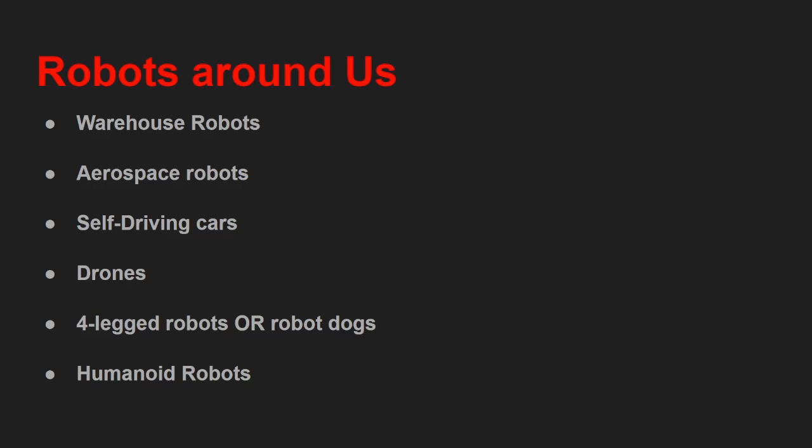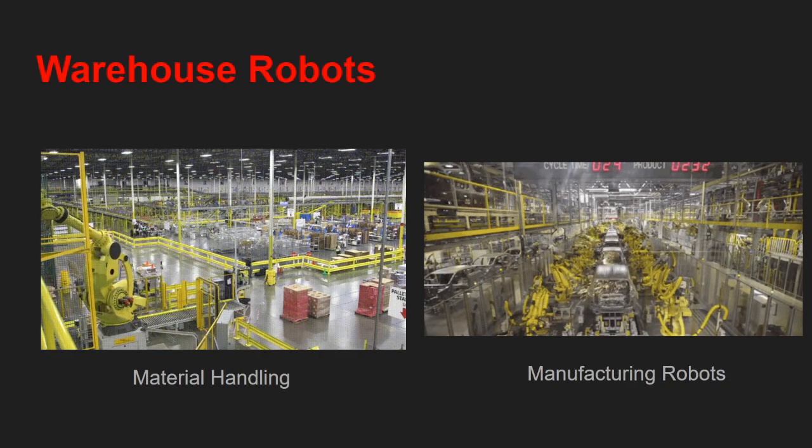There are also drones, which are flying robots, and four-legged robots or robot dogs that walk like animals and have several benefits over wheeled robots. Then we have humanoid robots, which look similar to humans and are being looked at as a solution for general-purpose robots — a robot which can do anything a human does.